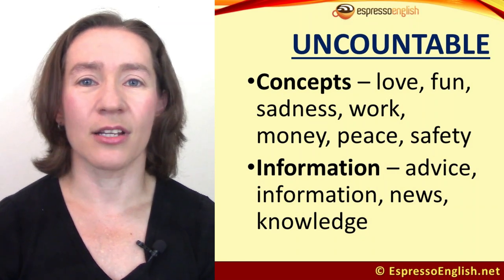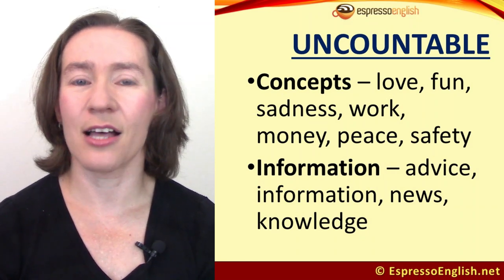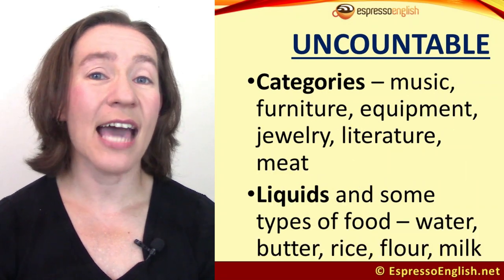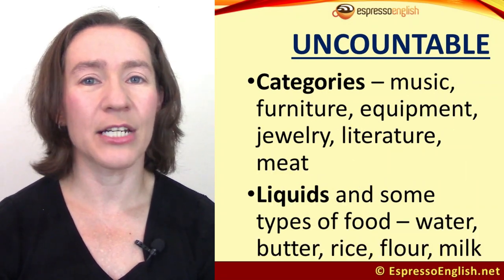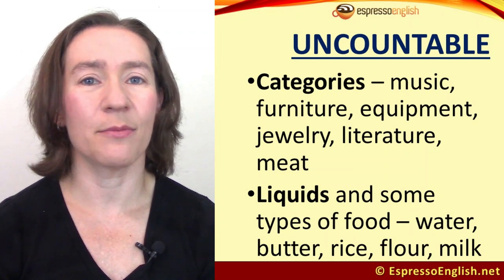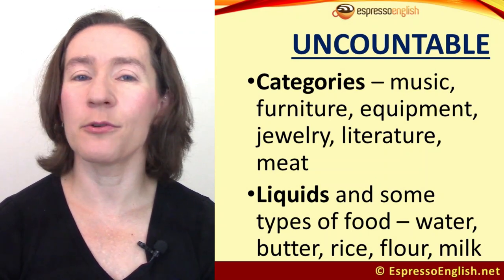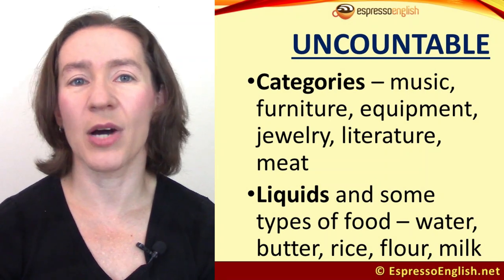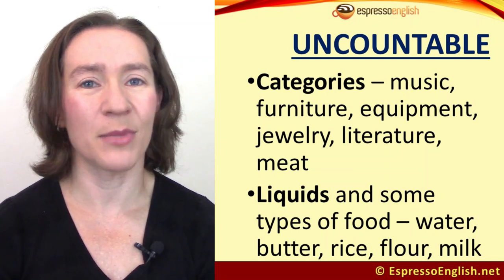Information-type words that are uncountable include advice, information, news, and knowledge. Words that are categories include music, furniture, equipment, jewelry, literature, and meat. And liquids and foods that can't be easily counted include water, butter, rice, flour, and milk.